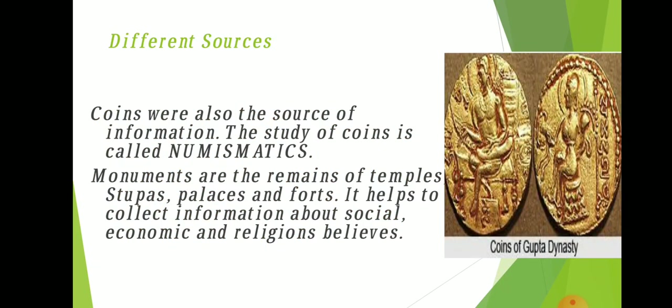Another source is coins. In earlier times, coins were made of different materials like lead, copper, bronze, iron, silver, gold and even leather. They give us useful information about art, religion, rulers, the use of different metals and the level of development of technology. The picture in the slides shows coins of the Gupta dynasty.